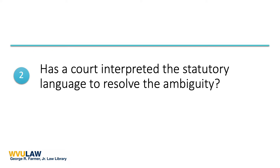If you determine that the law in question does, in fact, satisfy the threshold question and it is ambiguous, then your first task is to research the related case law to find whether the ambiguity has already been resolved. It is possible that your legal question is not the first to address the ambiguity and that past litigation has already tackled the question. The judicial opinion resolving the ambiguity may be primary binding authority or persuasive primary authority depending on your jurisdiction — either way, it's a critical part of your research moving forward.